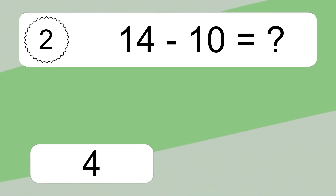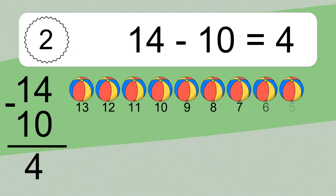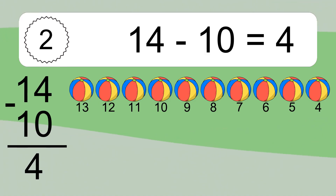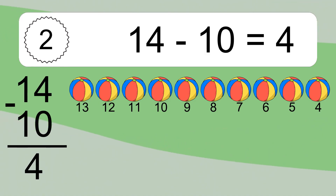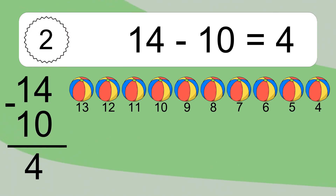14 minus 10 equals what? 14 minus 10 equals 4. Let's count it: 13, 12, 11, 10, 9, 8, 7, 6, 5, 4.